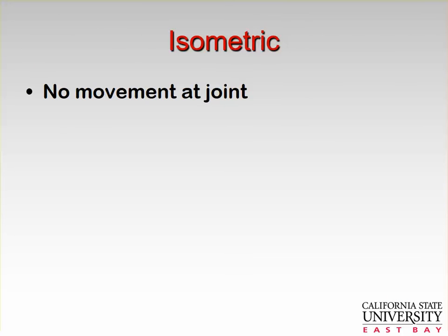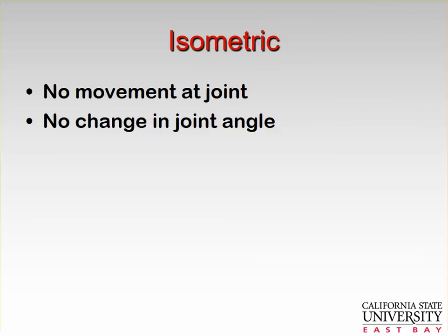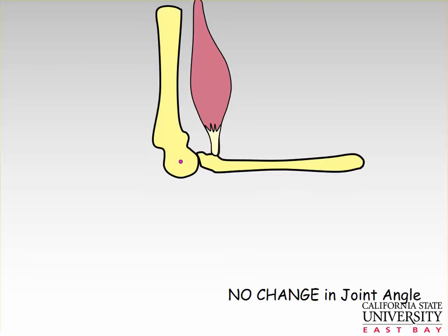We also have isometric contractions, where there is no movement at the joint — no change in joint angle at all. Here we see a movement that is purely isometric.